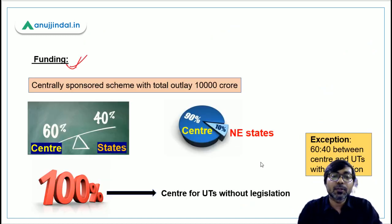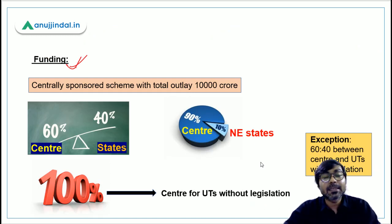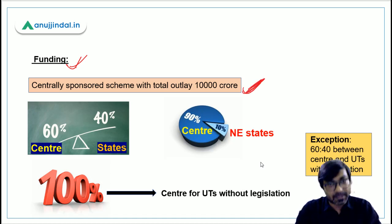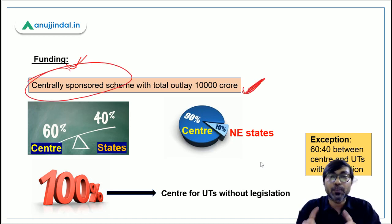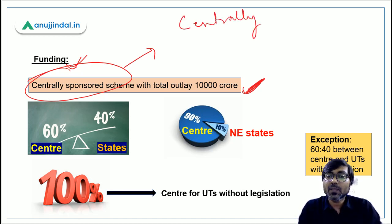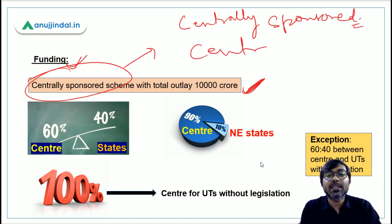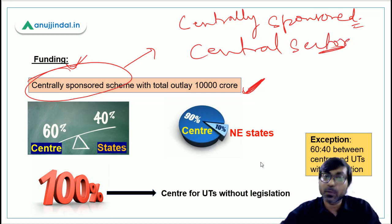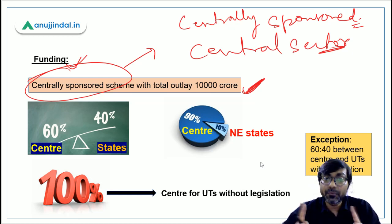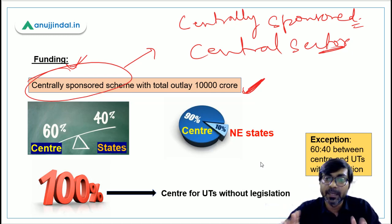Regarding funding, this is a Centrally Sponsored Scheme with a total outlay of ₹10,000 crore. There are two types of schemes: Centrally Sponsored and Central Sector. Under Central Sector, 100% funding is provided by the central government. Under Centrally Sponsored Schemes like this one, the funding is shared between the central government and the respective state government.